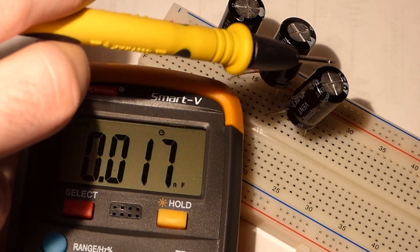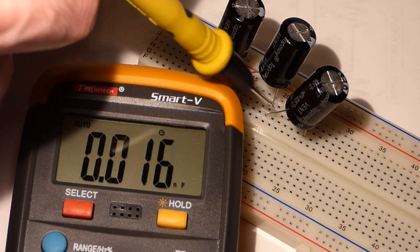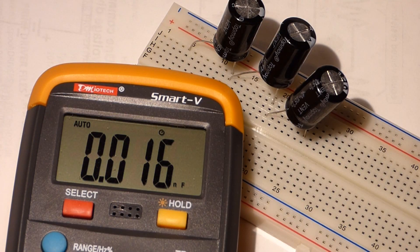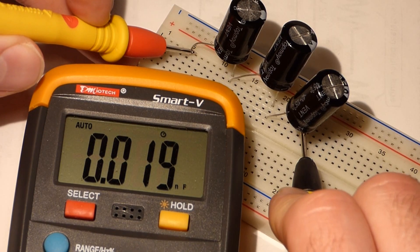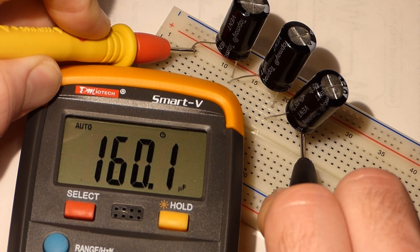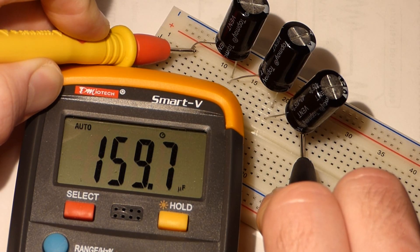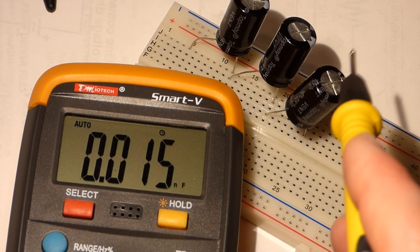Now I have a third capacitor here. This one, the positive side is connected to the negative side of this capacitor. And so now there's three of them in series. And when we take a measurement, you see that now it's about 160 microfarad.